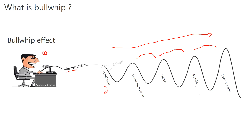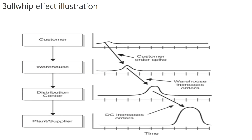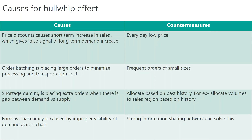So why exactly does the bullwhip effect happen? In this simple example, there is some change in demand from the customer. That demand signal goes to the replenishment warehouse, then there is a spike, then it goes to the distribution center, and then to the plant and supplier.